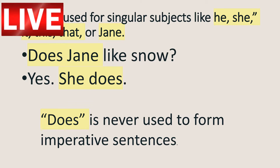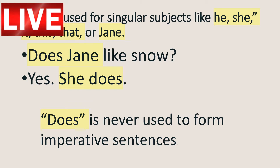What about 'does'? 'Does' is used with he, she, it, this, that, or somebody's name like Jane. For a question: 'Does Jane like snow?' — 'Oh yes, she does.' You might not even say 'yes'; you might just say 'she does', which means 'she does like snow.'